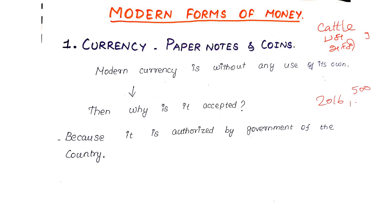In 2016, the government declared that 500-rupee and 1000-rupee notes were demonetized. Could you buy anything with those old notes? No. Could you use them for anything? No. After demonetization, a 500-rupee note became just a piece of paper — it had no value. Modern currency has no intrinsic use of its own.